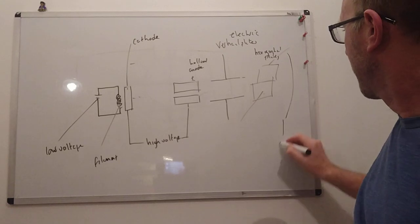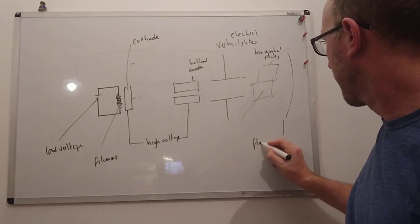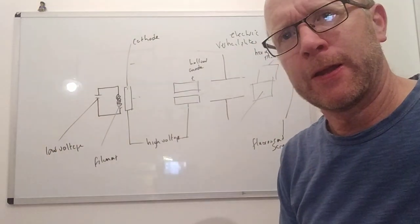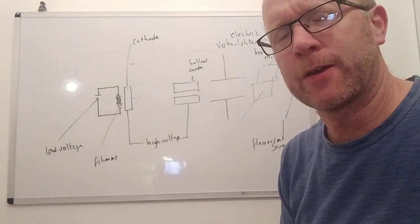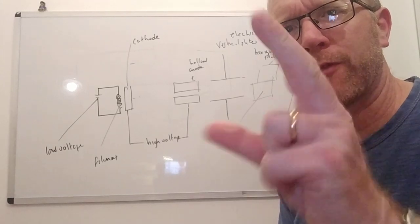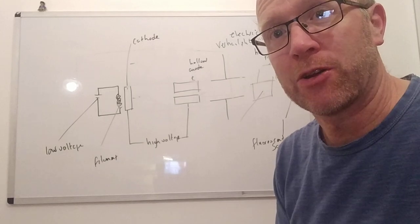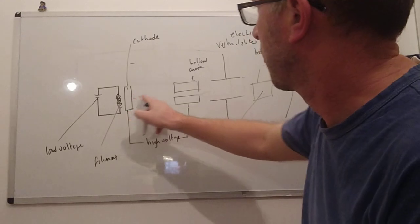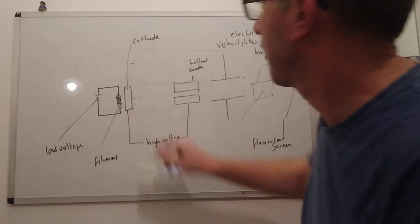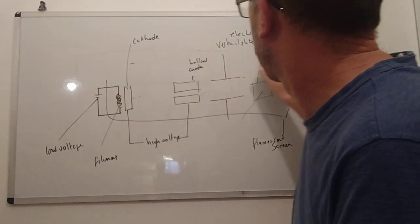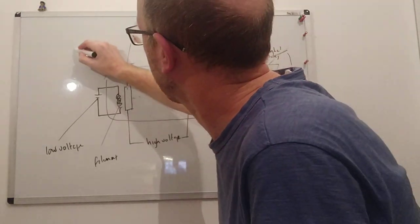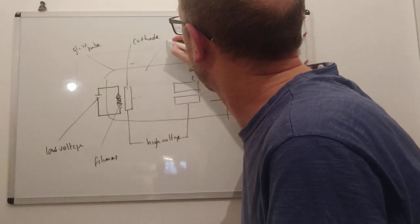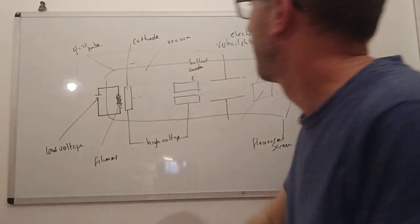At the end we have a fluorescent screen. When the electrons hit the screen, the kinetic energy of the electrons is converted into light energy and you get a flash — a colour, light emission. The electrons won't pass through if there's air in the way, so all around this we have a glass envelope, and inside is a partial vacuum.